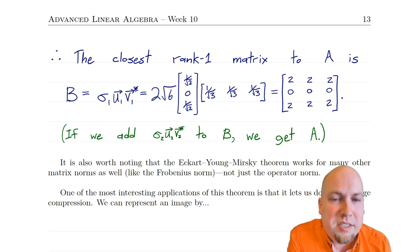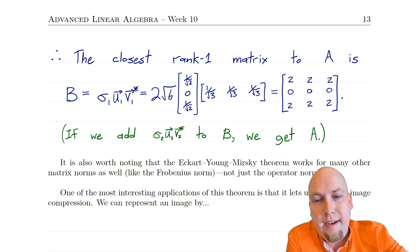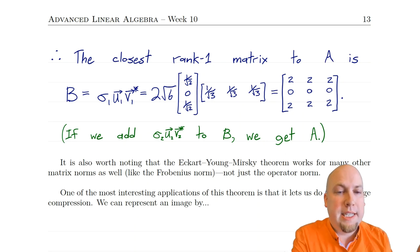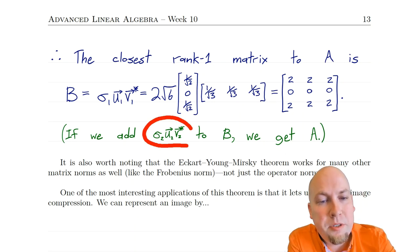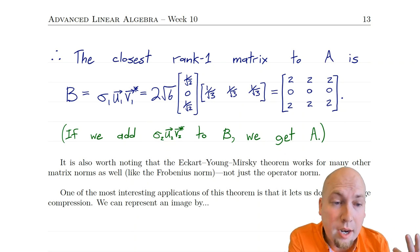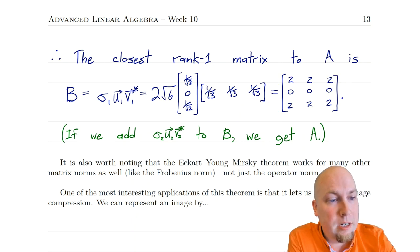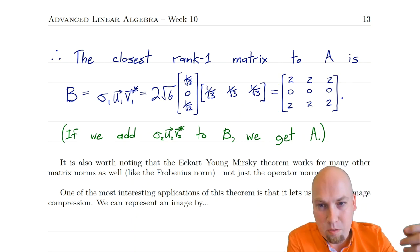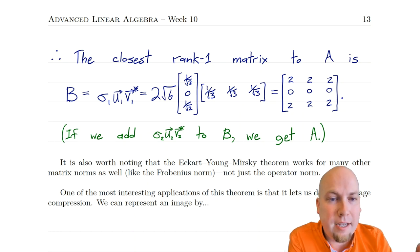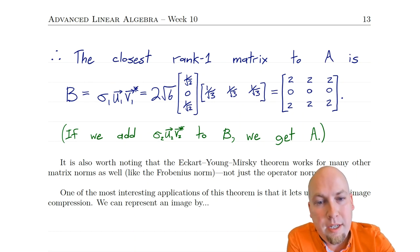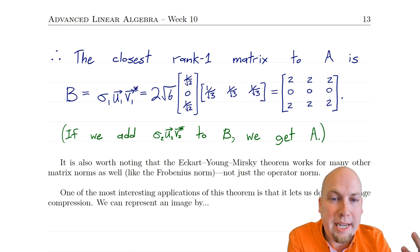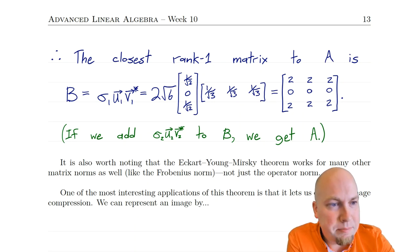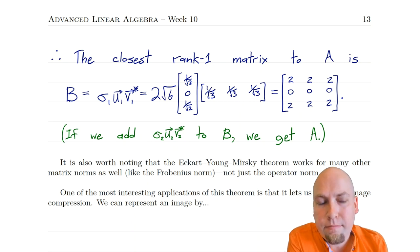As a side note: because of the orthogonal rank-one sum decomposition, if we were to add sigma_2 times U_2 times V_2 star to this matrix B, we would get exactly A — because A is a rank-two matrix and its decomposition has just these two terms. To get B, all we did was forget about the second term.